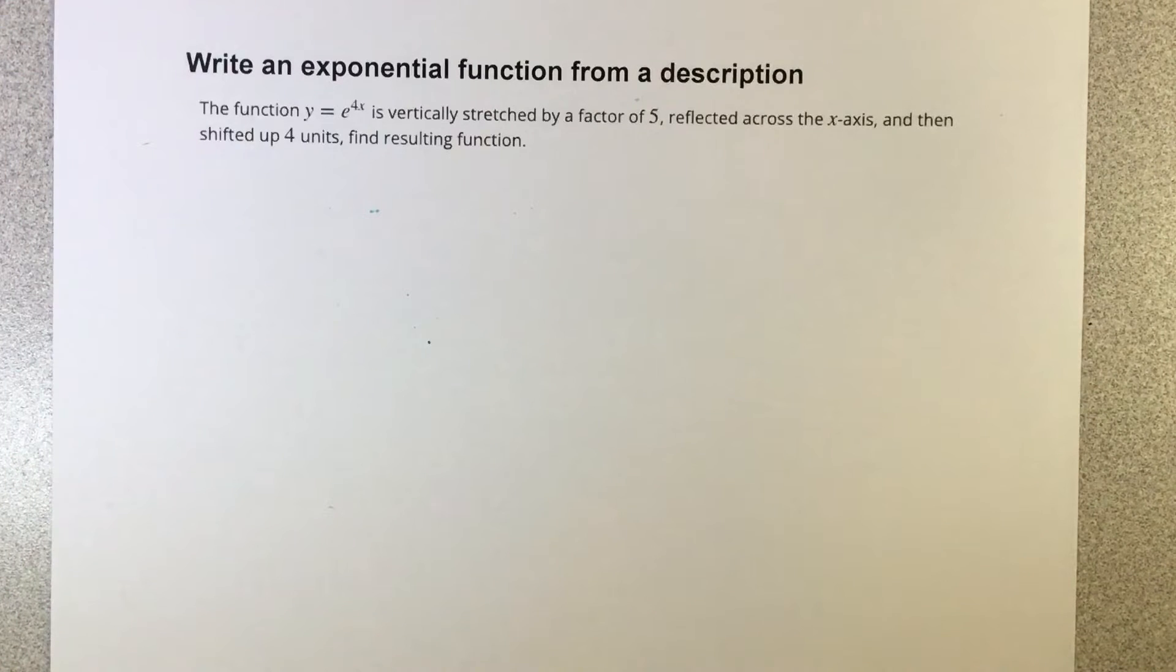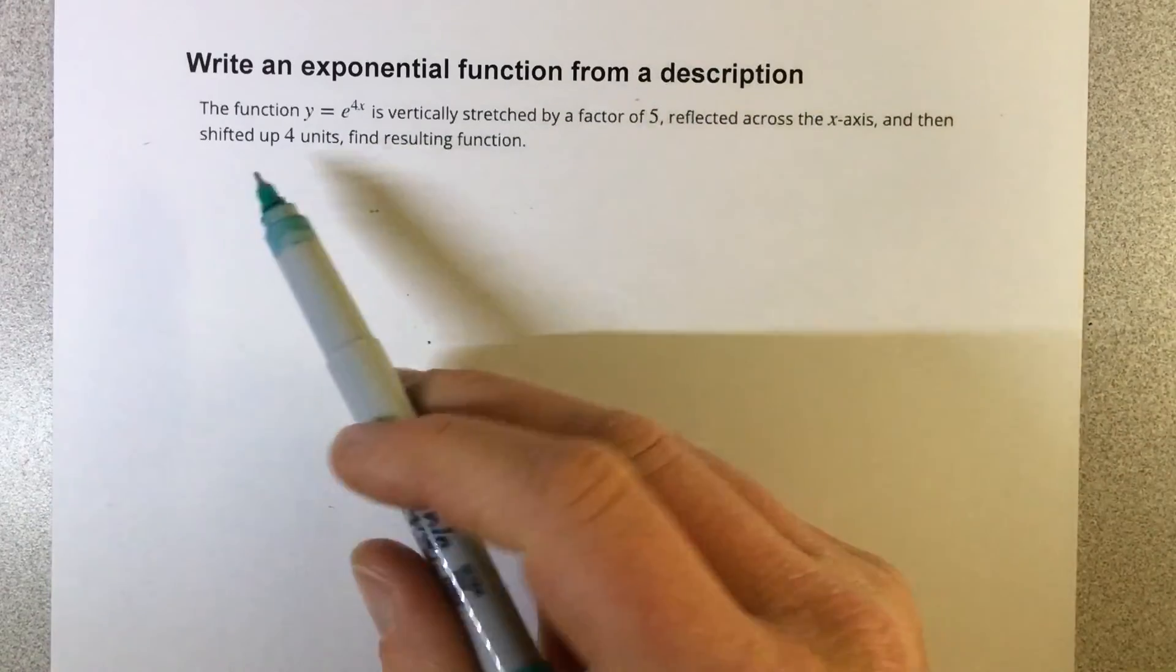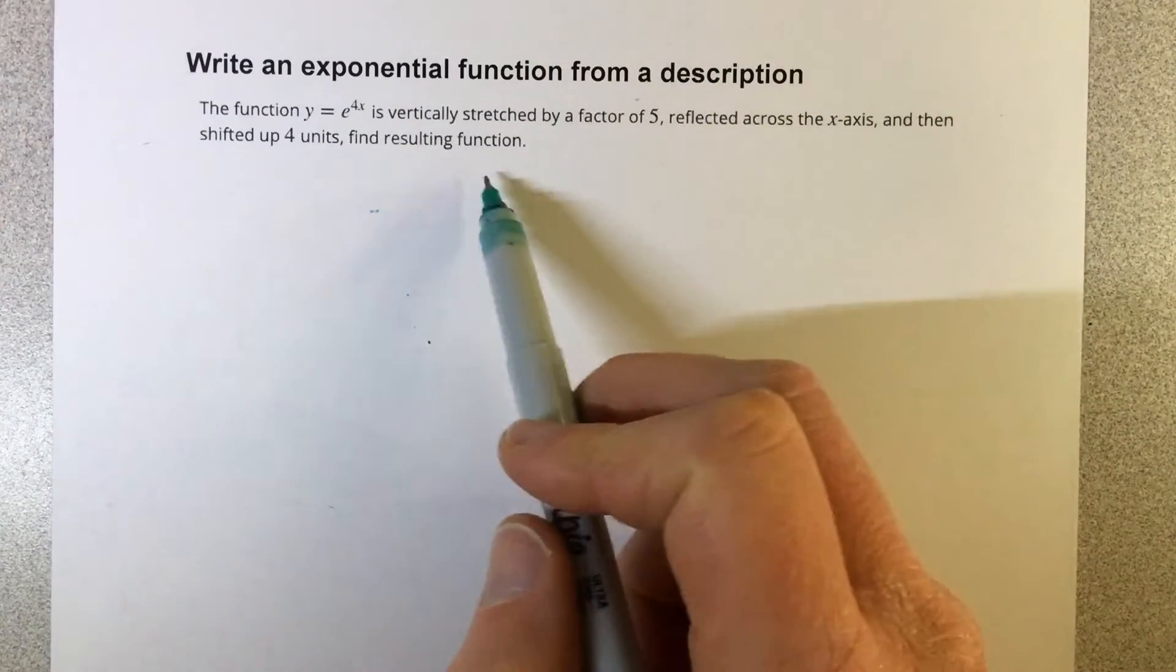In this video, we're going to write an exponential function from a description. The function y equals e to the 4x is vertically stretched by a factor of 5, reflected across the x-axis, and then shifted up 4 units. Find the resulting function.